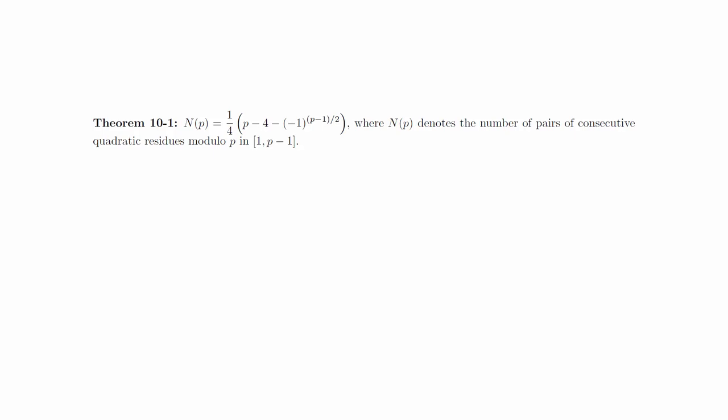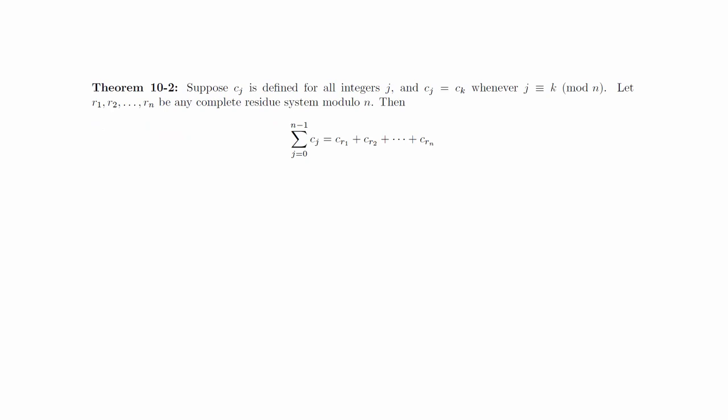These results are interesting on their own as sums of this type have applications in other problems. The first theorem we'll prove is basically obvious once you understand what it says. Theorem: suppose c sub j is defined for all integers j and c sub j equals c sub k whenever j is congruent to k modulo n. Let r1, r2, up to r sub n be any complete residue system modulo n. Then this formula must be true. This is just a fancy way of saying that under the right conditions we can substitute the terms in a sum with representatives from any complete residue system. Notice that the set from 0 to n minus 1 and the set of r sub i are both complete residue systems.